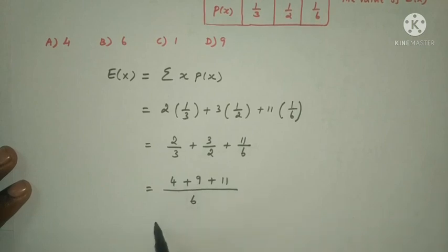24 by 6. Canceling, the answer is 4. Therefore, the answer is option A, the answer is 4.